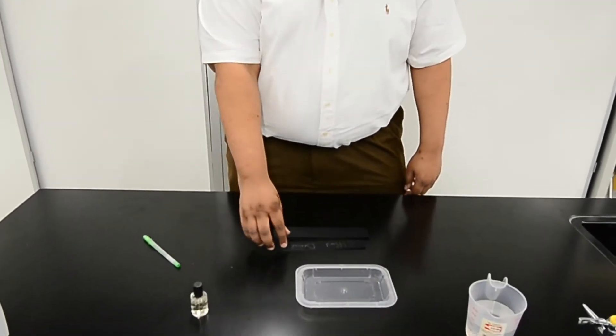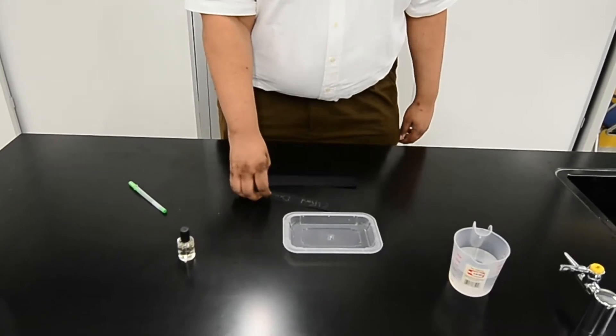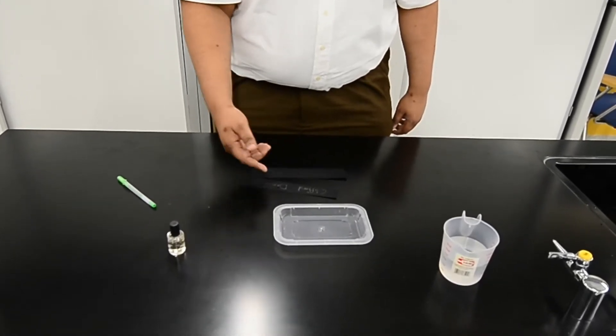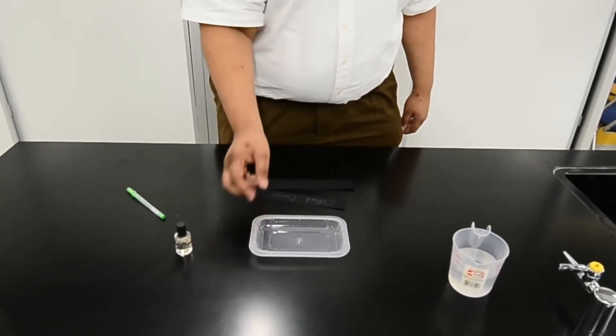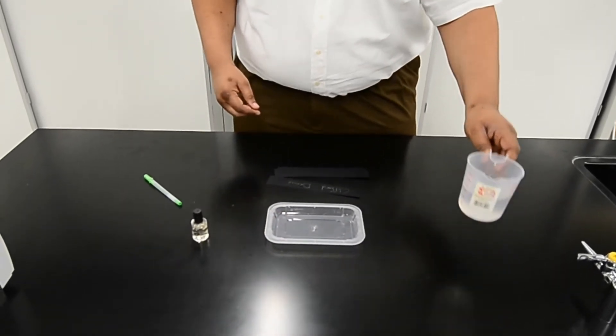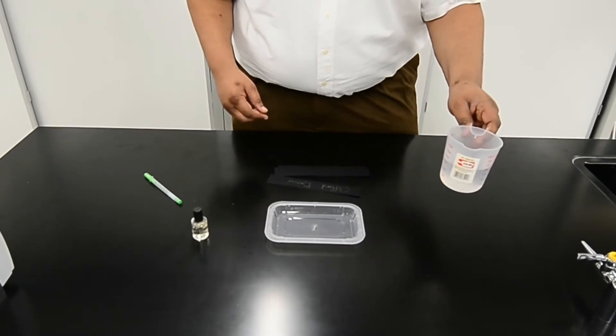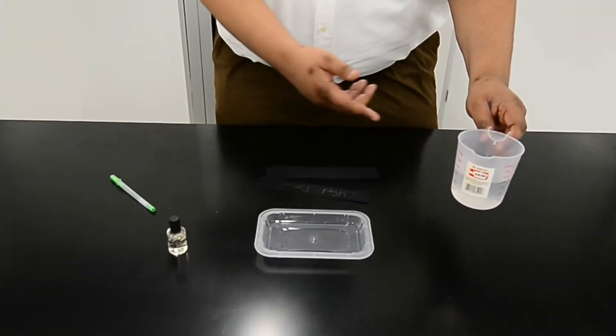The materials you're going to need for this experiment are black construction paper, clear nail polish, a shallow container, a measuring cup, and water.